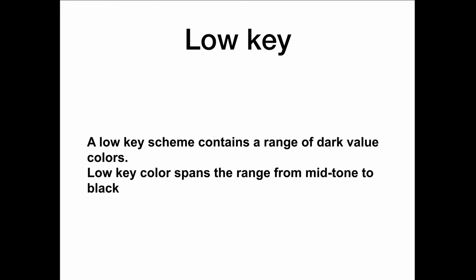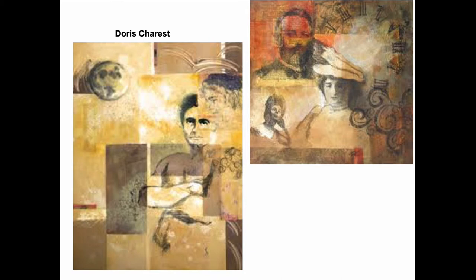This is when the color is pure or when you add white to it. Low key colors contain a range of dark value colors. Low key ranges from mid-tone to black. So these are low key colors — I've included darks and I've added black and grays to my color. These are low key paintings.